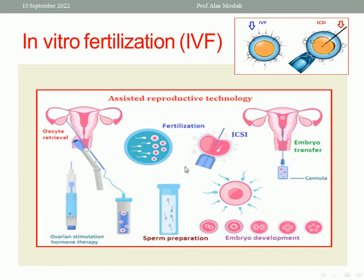In IVF, we perform ovarian hyperstimulation, then when the follicles reach maturation we do oocyte retrieval. At the same time, we take the sperm, wash it, and culture it in culture media. The oocytes and prepared sperm are collected in a dish. Fertilization happens with embryo development at day 3 or day 5. The embryo is then transferred inside the uterine cavity. This is called IVF.